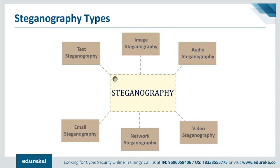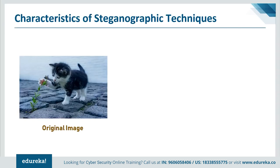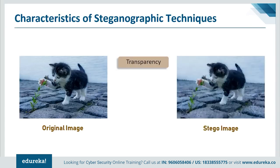Now that we've learned different types of steganography, let's look at features a steganography technique must possess. On screen is a cover image — an adorable kitten — which is the file where we store our secret data. The first feature is transparency. Each cover media has a certain information-hiding capacity. If more data is hidden inside the cover than it can hold, it results in degradation of cover media. As you can see, the stego image after hiding data inside our cover image is not exactly similar to the original — there's some distortion. If an attacker notices this distortion, the steganography technique fails.